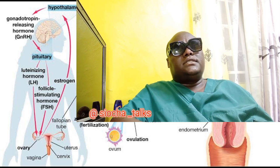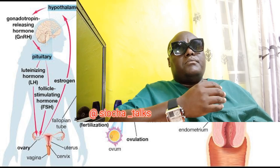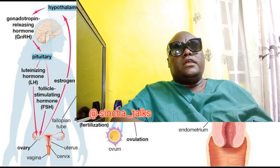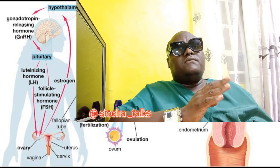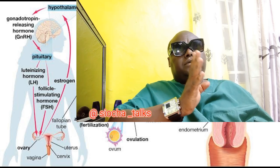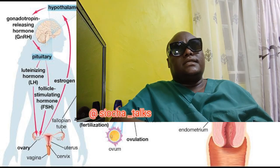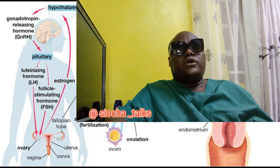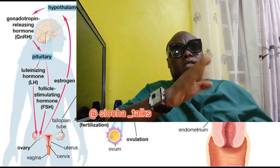Ovulation can also be affected by certain health conditions or medications, and irregular ovulation can sometimes be a sign of an underlying issue. It is also important to know that ovulation can occur in the absence of menstruation, such as during pregnancy or while taking certain types of hormonal birth control. One can ovulate without menstruation — that's very important to note.